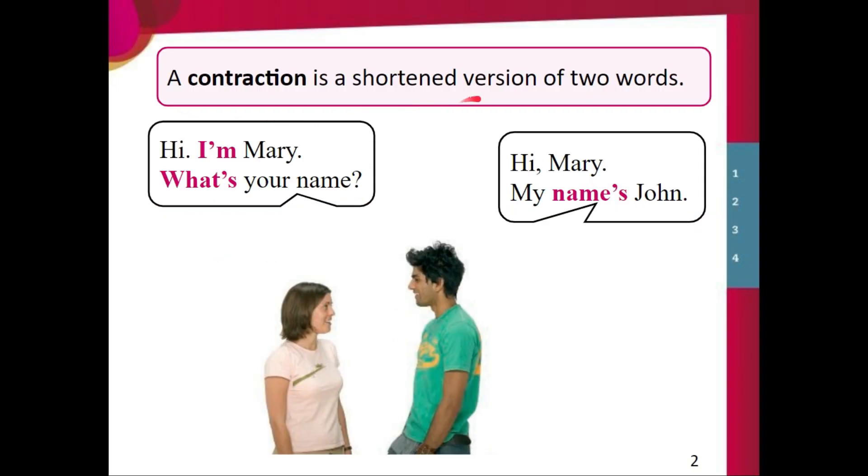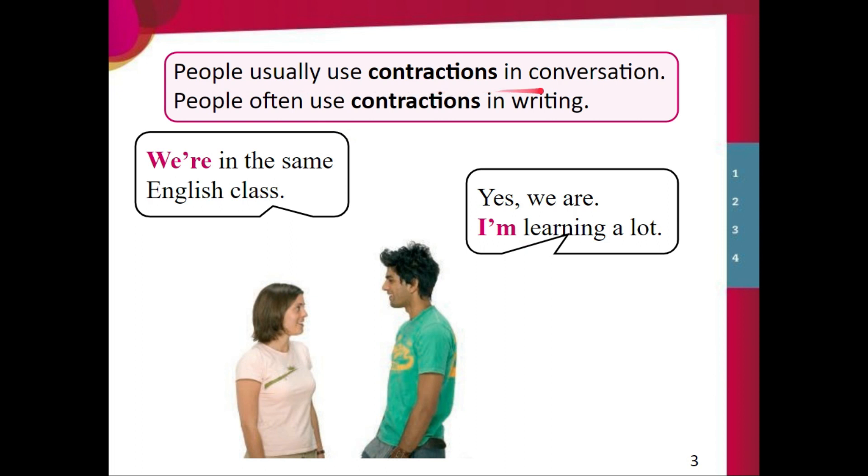A contraction is a shortened version of two words. So instead of saying I am, we are saying I'm. So we have this conversation. Hi, I'm Mary. What's your name? Hi Mary, my name's John. So instead of name is, we have names. Instead of what is, we have what's. Now people usually use contractions in conversation. People often use contractions in writing. So it's not really common in writing, but it might happen.